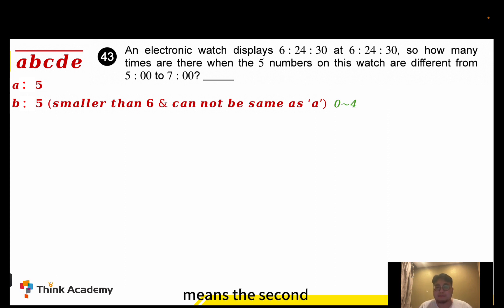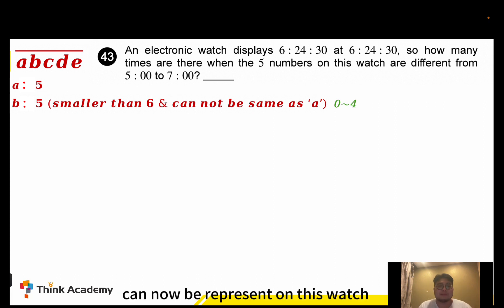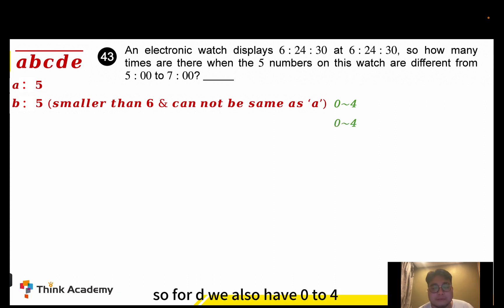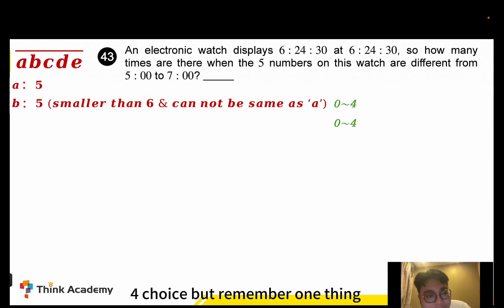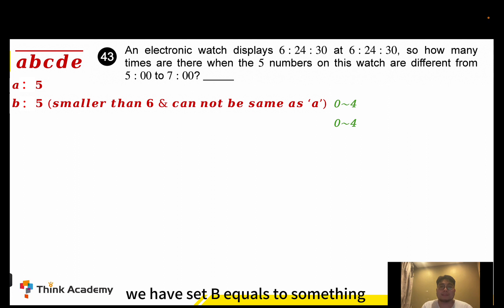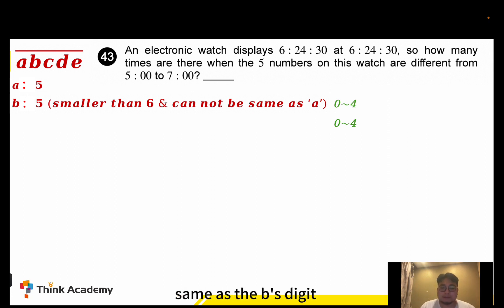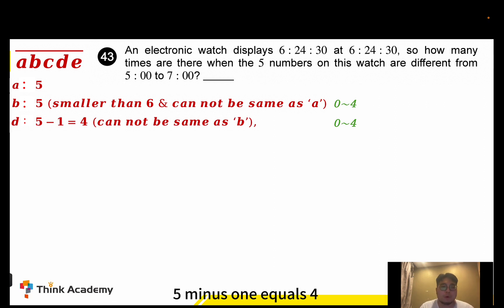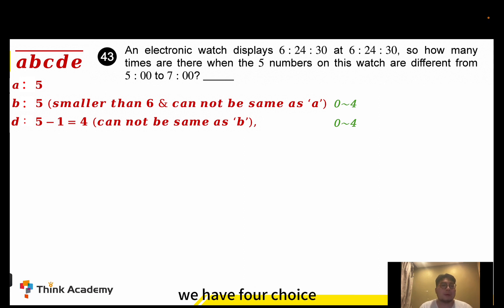For D, we only have 60 seconds in one minute, so D can only be zero to five. But D cannot be the same as B, so we have five minus one equals four choices for D.